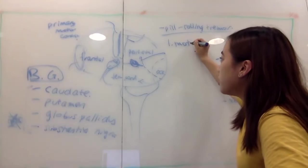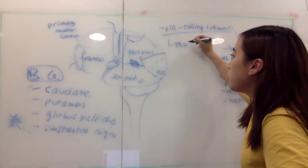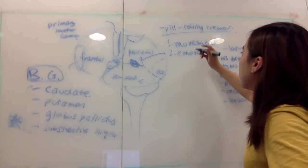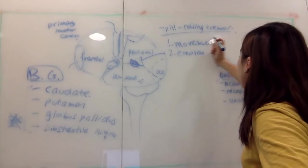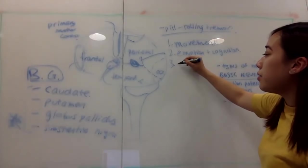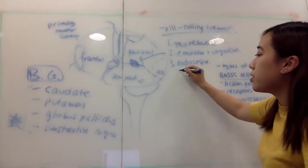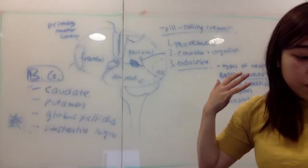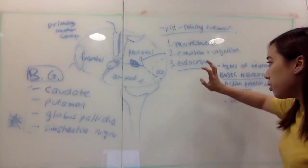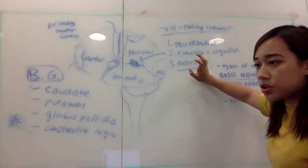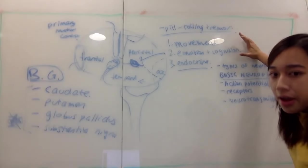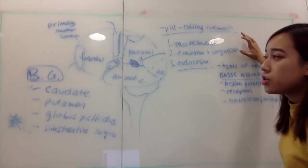So the three dopamine circuits are: movement, emotion and cognition, and endocrine control. The endocrine system involves hormones that travel directly to your blood via ductless glands. Also, in the state round, they'll mention a term called catecholamines — do you know what neurotransmitters count as catecholamines?